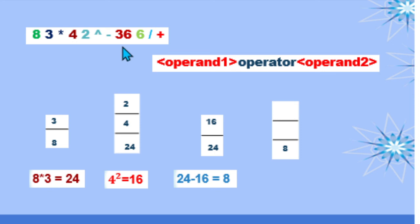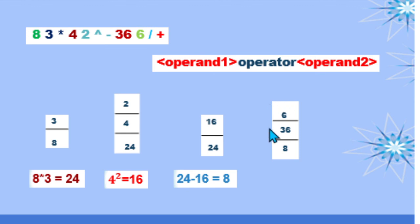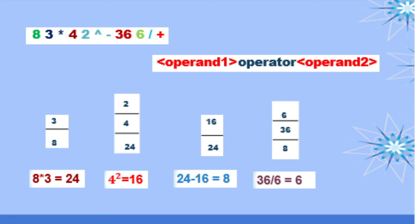We continue scanning. We have 36 — it is an operand, so we push it on our stack. Next we have 6 — it is also an operand, so we push it on our stack. Then we have our division operator. Since it is an operator, we pop out the last two operands from our stack. 36 is operand 1 and 6 is operand 2. We perform division: 36 divided by 6 is equivalent to 6. The stack still contains 8, and we push the obtained value 6 on our stack.